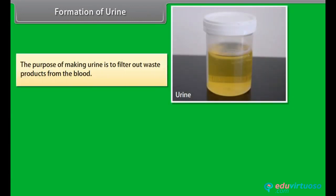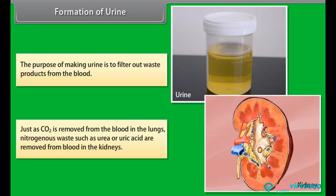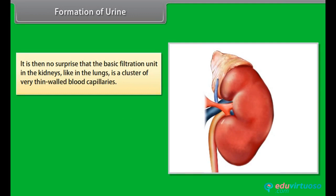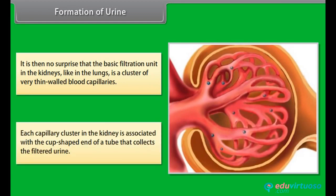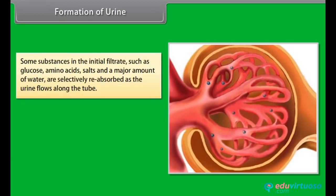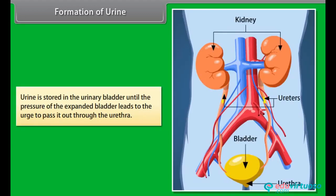The purpose of making urine is to filter out waste products from the blood, just as CO2 is removed from the blood in the lungs. Nitrogenous wastes such as urea or uric acid are removed from blood in the kidneys. Each capillary cluster in the kidney is associated with a cup-shaped end of a tube that collects the filtered urine. Some substances in the initial filtrate such as glucose, amino acids, salts, and a major amount of water are selectively reabsorbed as the urine flows along the tube. The amount of water reabsorbed depends on how much excess water there is in the body and on how much dissolved waste there is to be excreted. Urine is stored in the urinary bladder until the pressure of the expanded bladder leads to the urge to pass it out through the urethra.